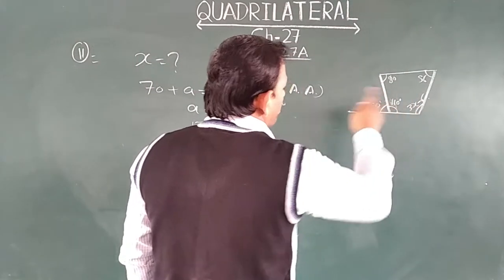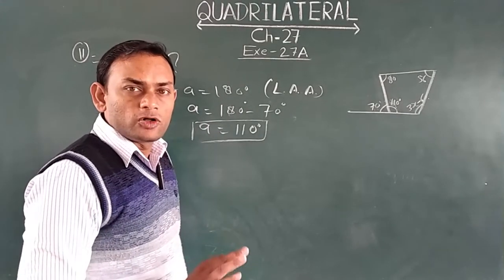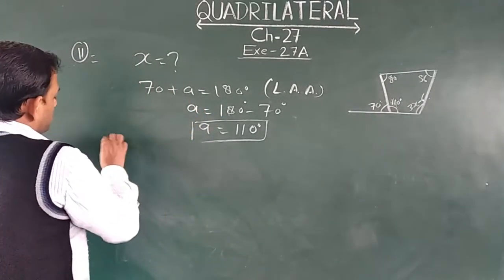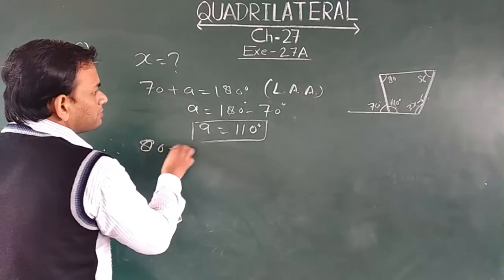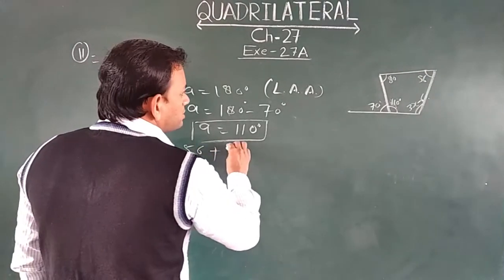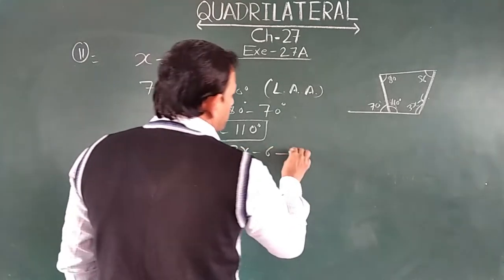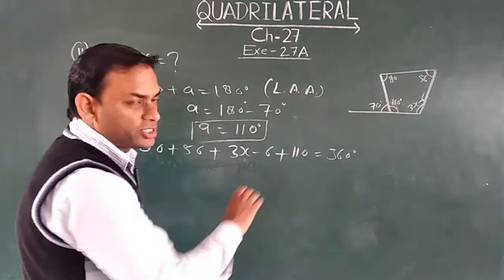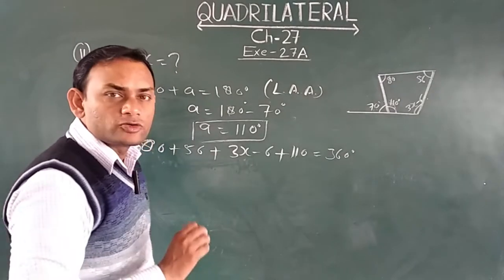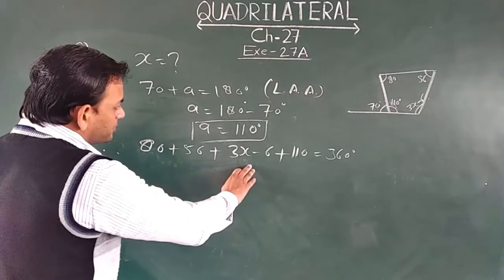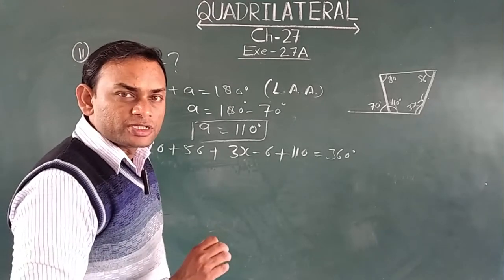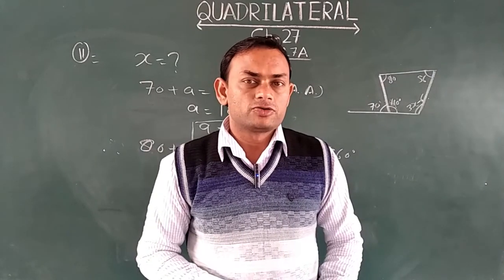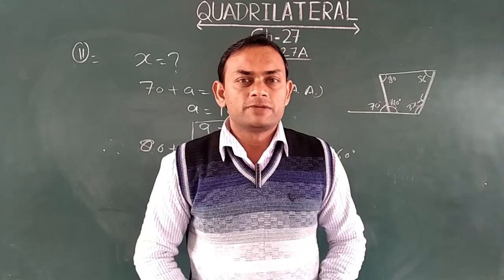Now we have all four angles of the quadrilateral. Since the sum of all angles equals 360 degrees: 80 plus 56 plus 3x minus 6 plus 110 equals 360 degrees. From this equation you find the value of x using algebra, as I showed in question 3. These were some questions from this exercise — try the rest on your own. Keep practicing. Thank you.